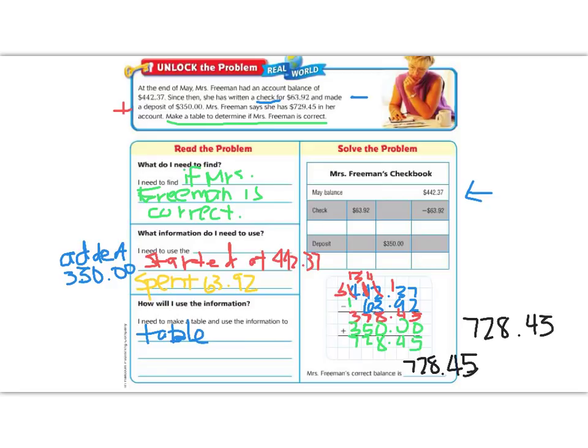Now we need to decide if this answer is reasonable or not. So if we look at her number, she says she is 729.45. Is her answer reasonable? Is her answer correct? No, she is off by one number. Her real number should be 728, not 729.